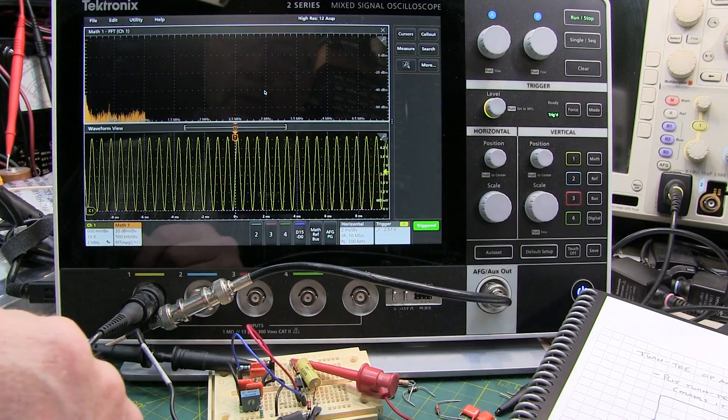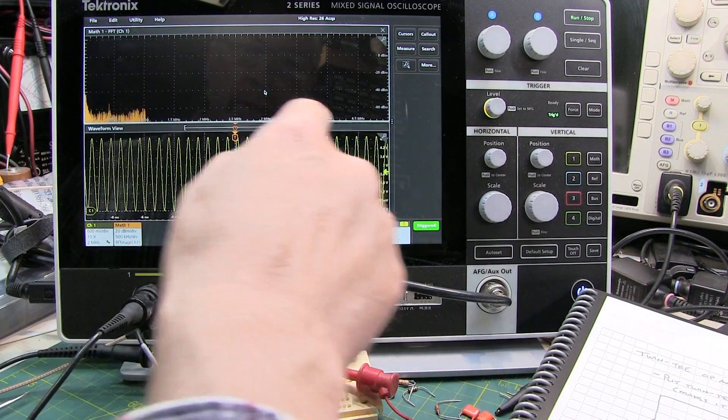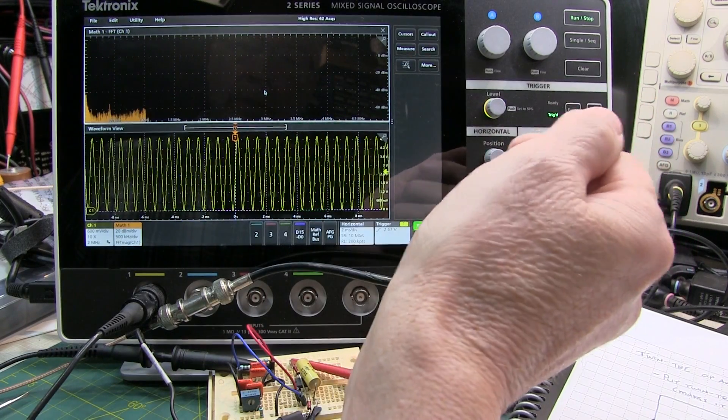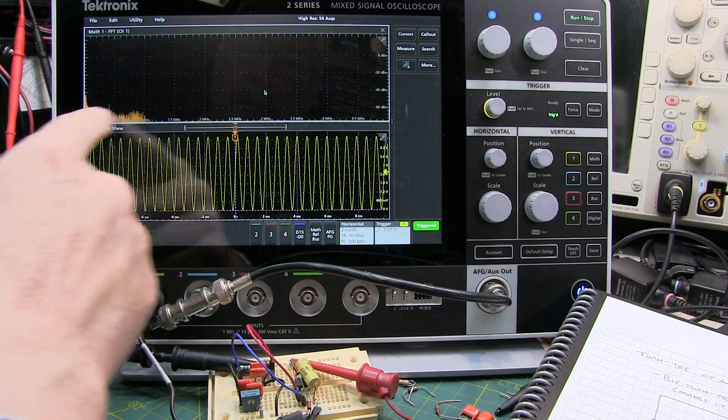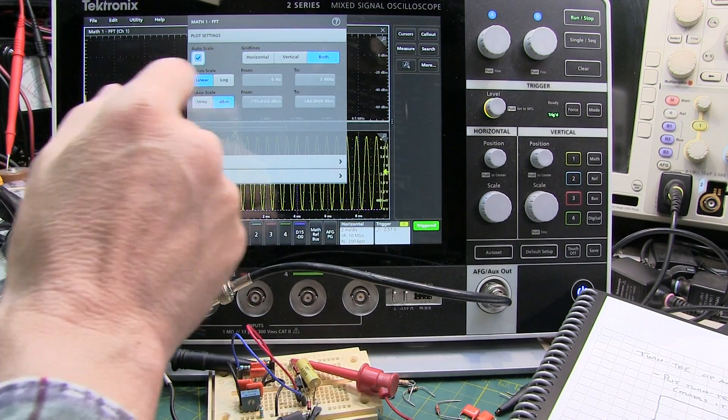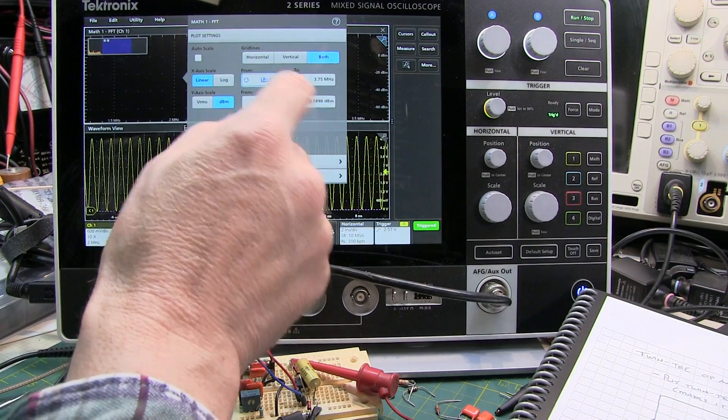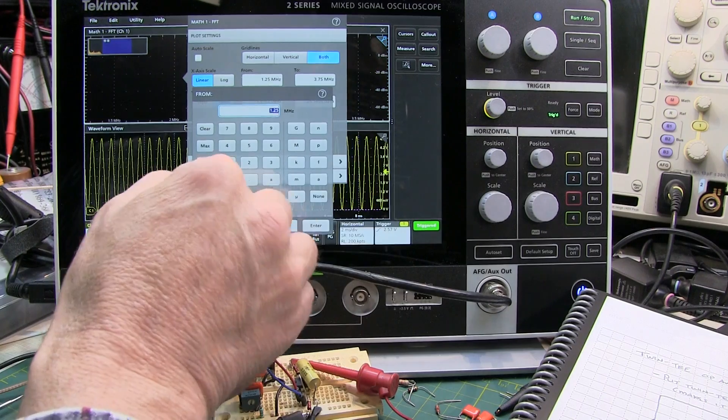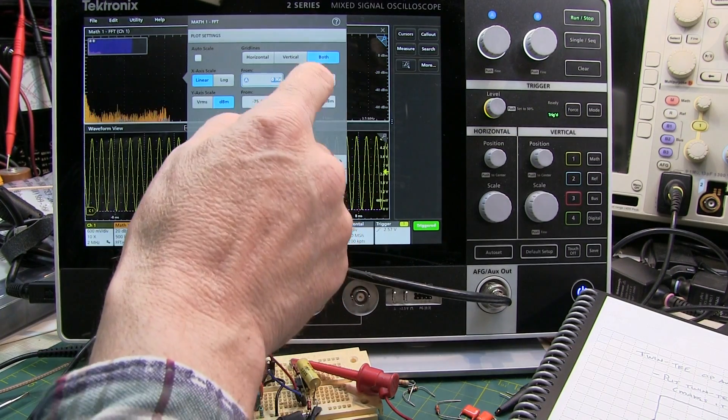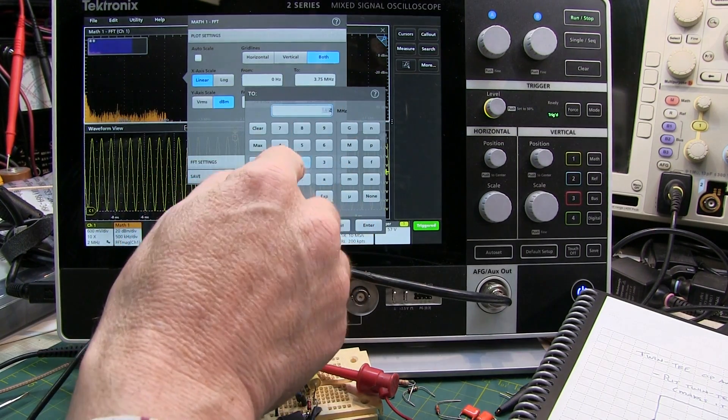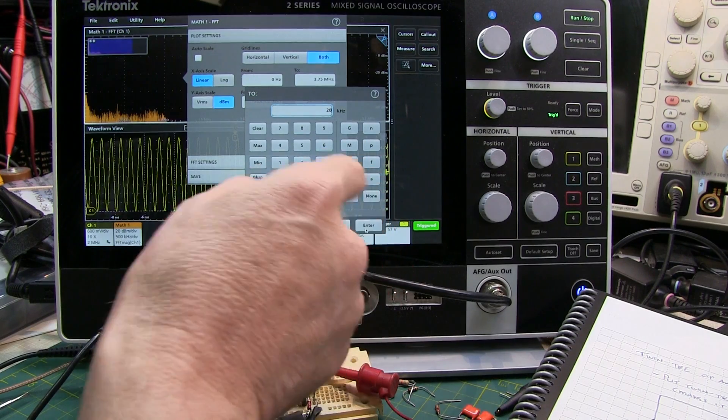So now I've got the FFT, but you can see it's going from DC out to 5 megahertz. We're really interested in DC out to about 20 kilohertz. So I can go in here and just tell it that I want to change the scale from zero to 20 kilohertz.